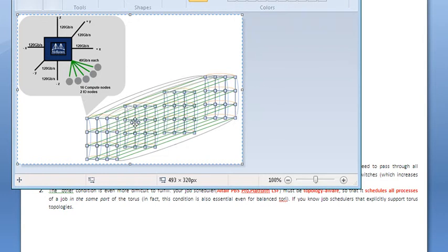This 3D TORUS has each server with six neighbors. For example, this server has six nearest neighbors.